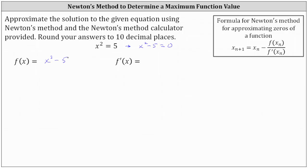The zeros of the function f of x equals x squared minus five will give us the solutions to the given equation. And if f of x equals x squared minus five, f prime of x, also required for Newton's method, is 2x.